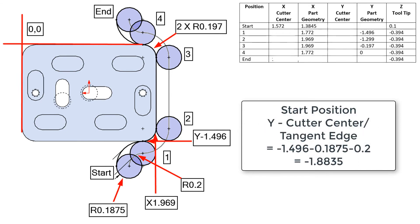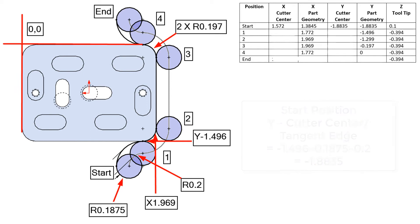The Y value for the center of the cutter at the start will be negative 1.496, minus the cutter radius, minus the 0.2 arc, which equals negative 1.8835. The Y value for the tangent edge will be the same: negative 1.8835.